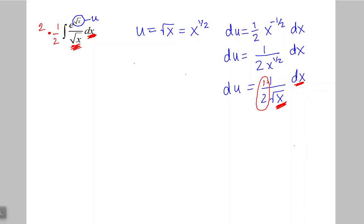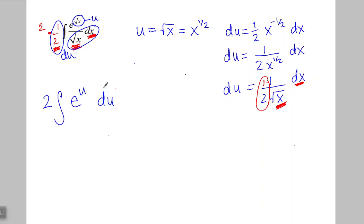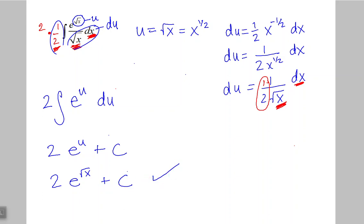So we're really only multiplying by 1. This 1 over 2 square root of x dx is all of my du, so the only thing left over is 2, which goes on the outside of the integral. E to the u stays, and all of the rest is du. The antiderivative of e to the u is simply e to the u plus C. Then substituting back, u equals square root of x, so the answer is 2 e to the square root of x plus C. Remember that you can always take the derivative of your answer and see if you get what you started with in the integrand.